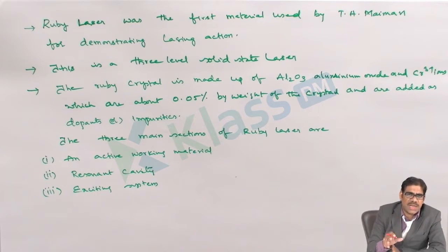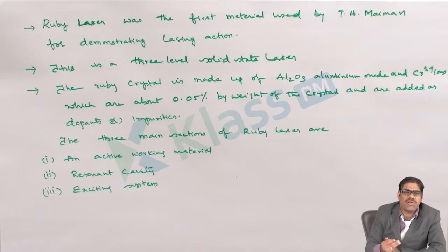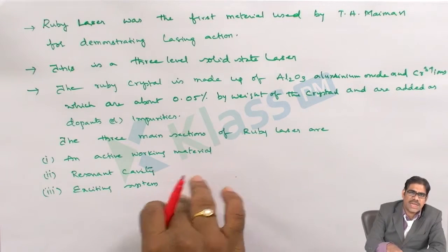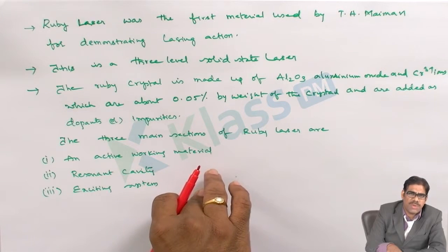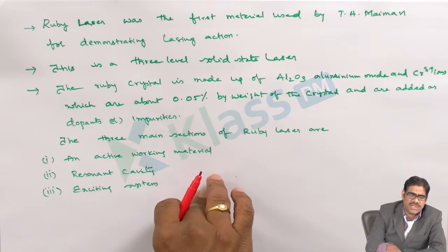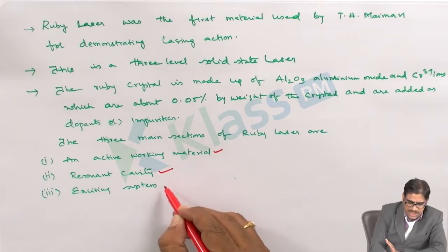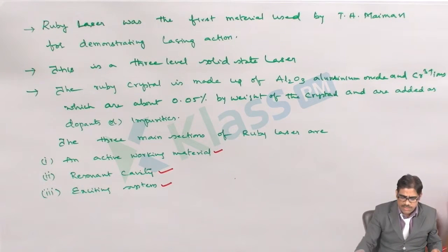Once the flash lamp is switched on and its light is incident on the material, the atoms in the ruby rod will get excited and be involved in the lasing action. So there are three main sections in the working of a Ruby laser: an active working material, a resonant cavity, and the exciting system.